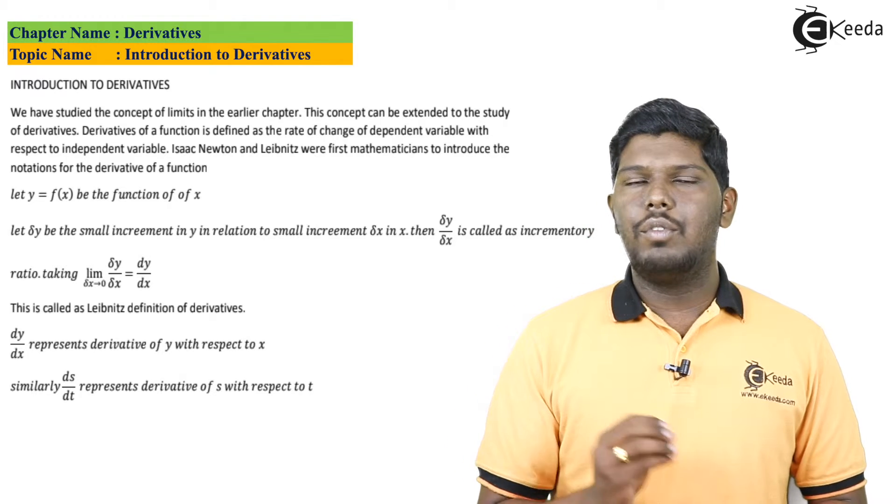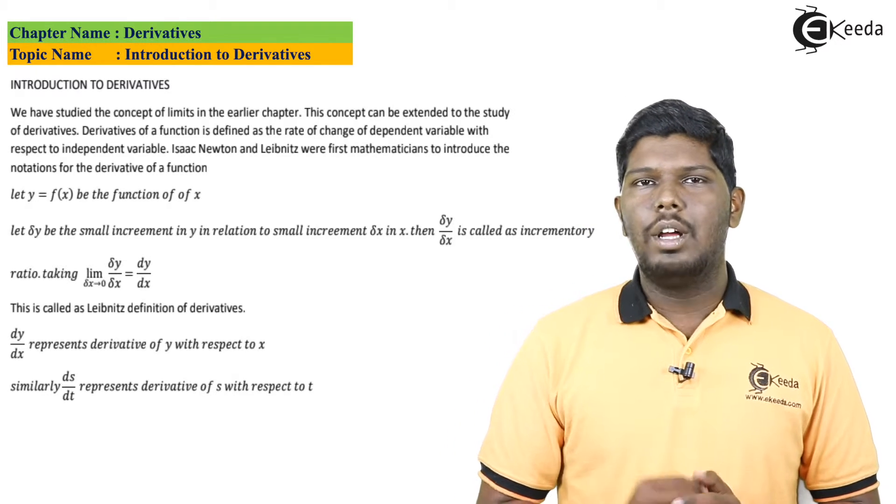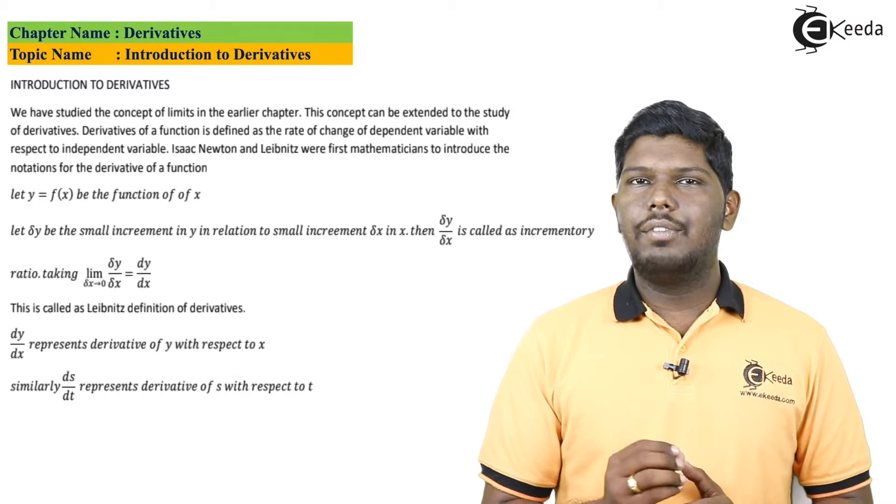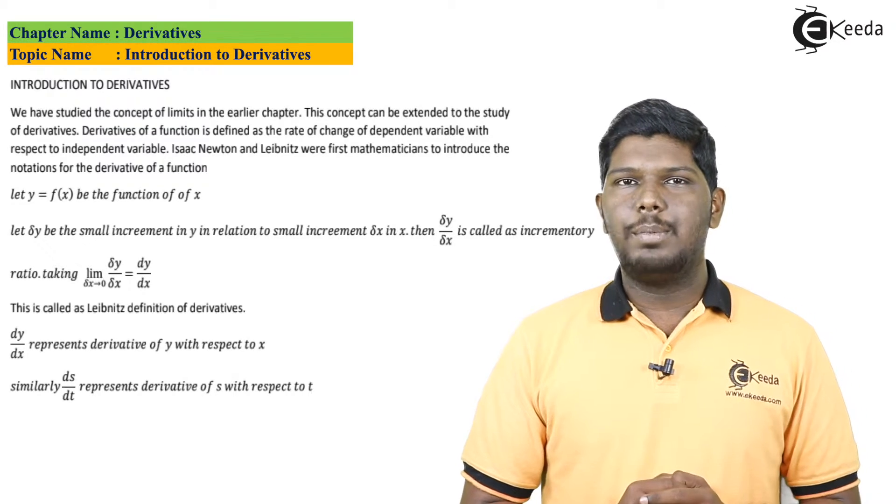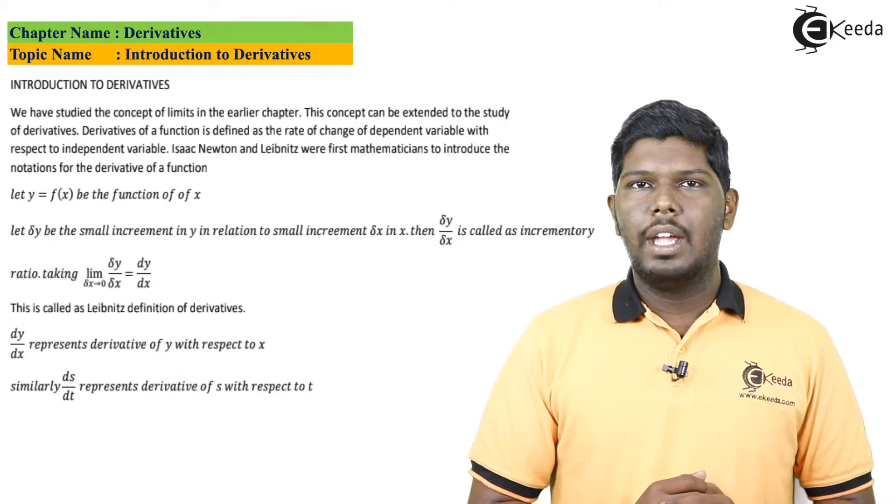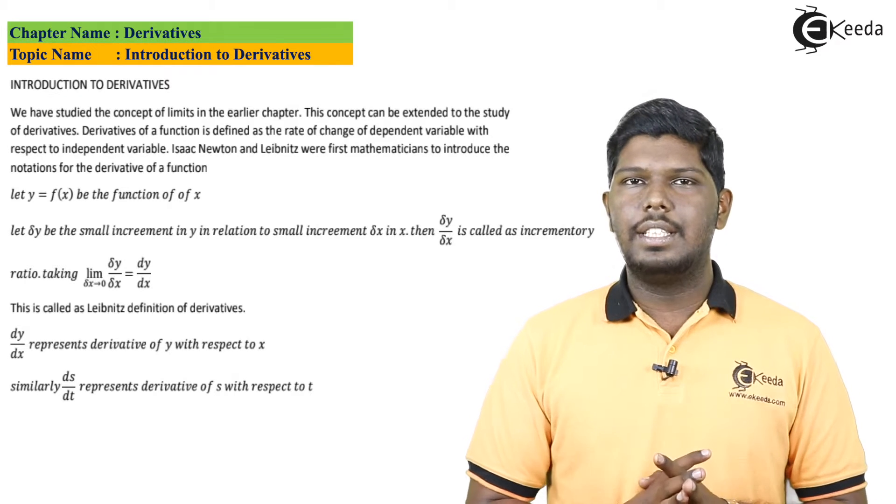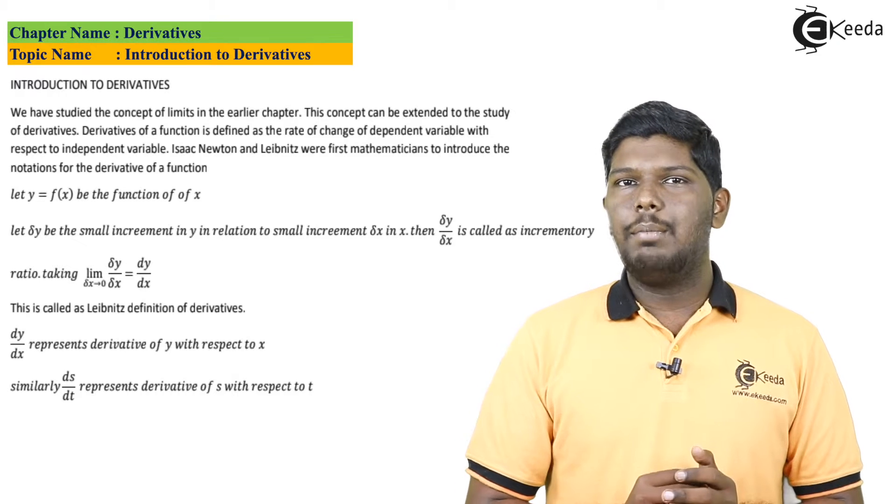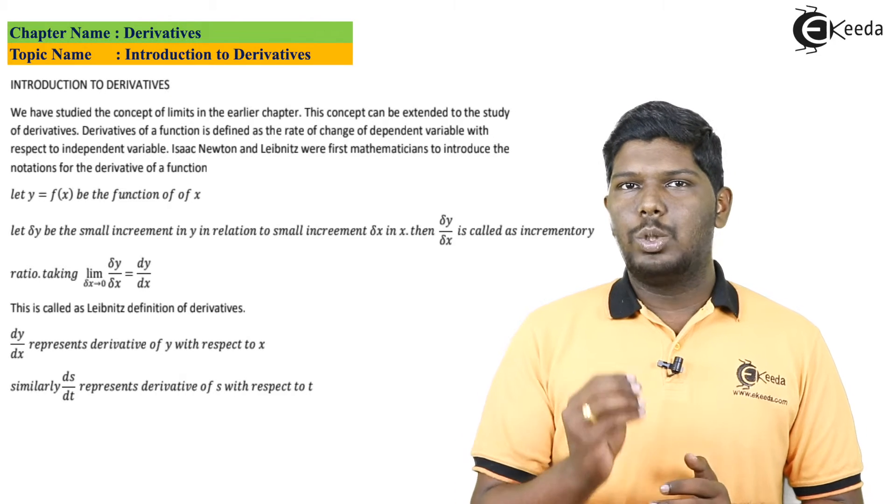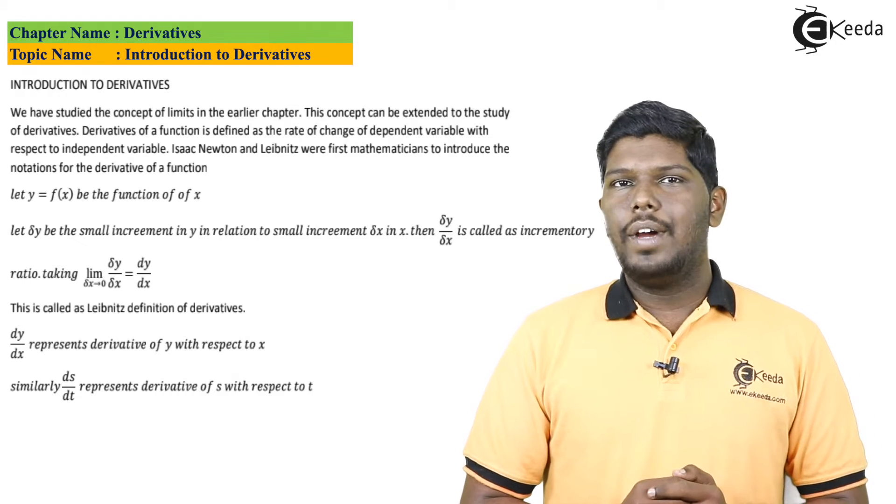If I give you a simple example: what is velocity? Velocity is defined as change in displacement with respect to time. So if s is the displacement of a particle in time t, the change in displacement will be ds, and at the same time the change in time is dt. So ds by dt is nothing but velocity.